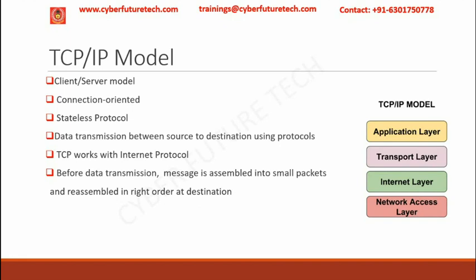The next layer is the transport layer. This layer is mainly used for data transmission and also adds header information to the data. It breaks the data into smaller units and is also responsible for arranging the packets in a sequential order at the destination. Functions like multiplexing and segmenting or splitting of data are done in the transport layer.